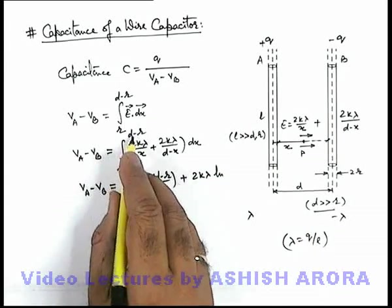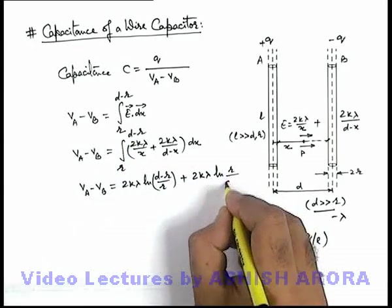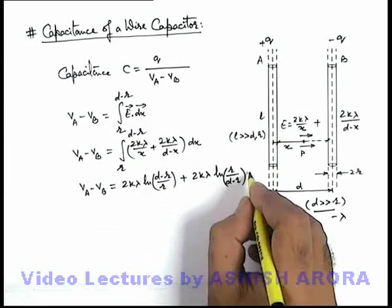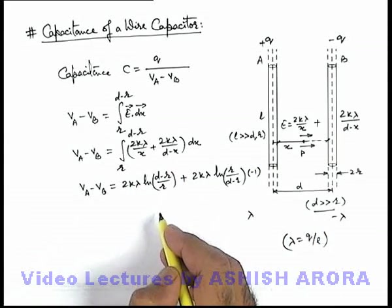If we substitute the limits from d minus r to r it'll be r upon d minus r multiplied by minus 1 because the coefficient of x is minus 1 here.